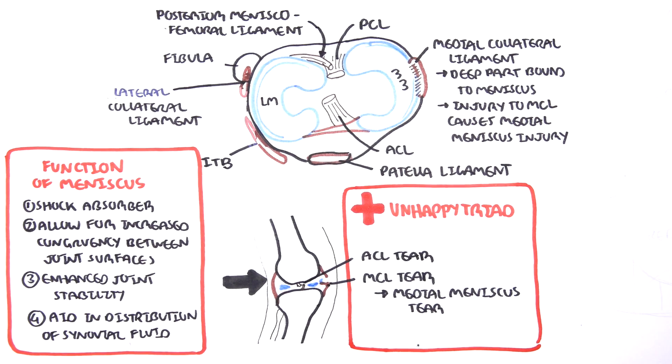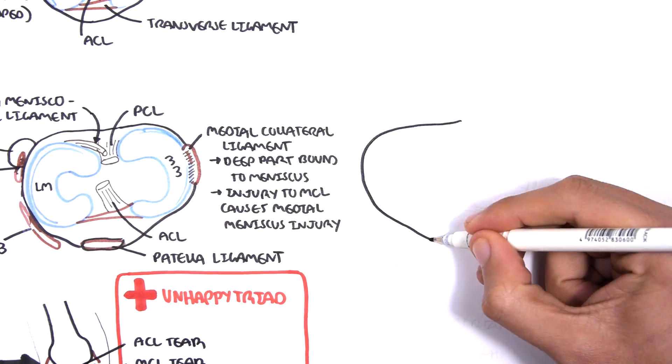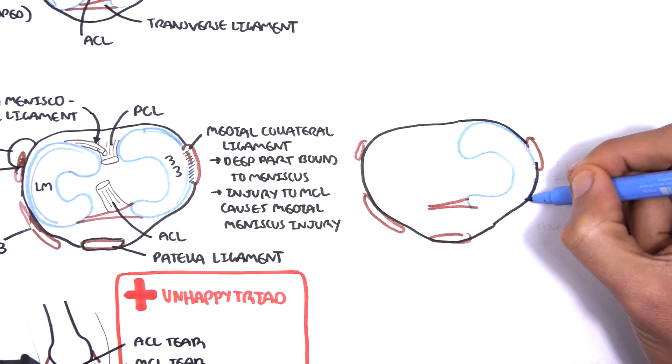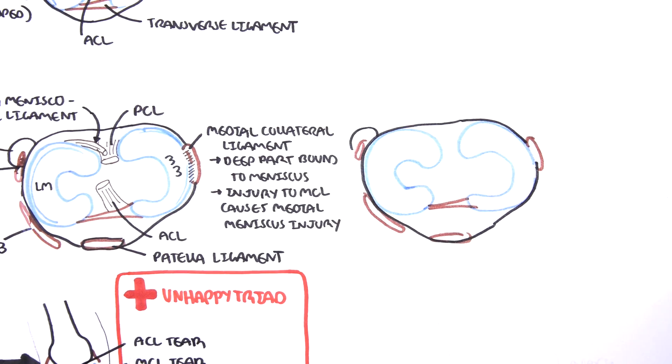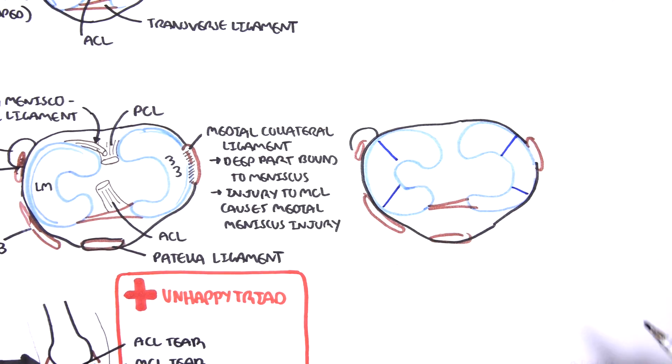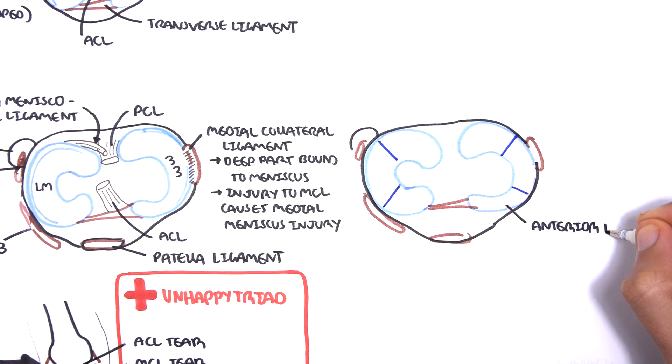Finally, drawing the same image looking at the right tibia from the superior view, we can see the menisci again. The menisci can be divided into three sections. The anterior part are the anterior horns. The anterior horns are connected by the transverse ligament.